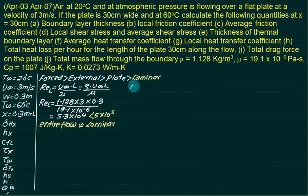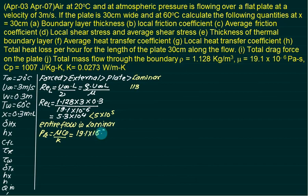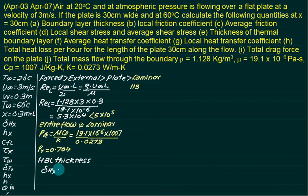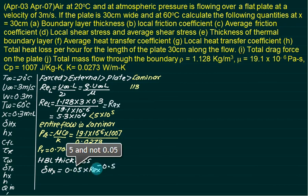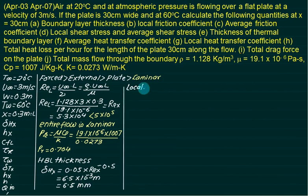For laminar flow, go to the table (forced convection, external flow, flat plate, laminar). Calculate the Prandtl number: Pr = μ·C_p / k, with μ = 19.1×10⁻⁶, C_p = 1007 J/kg·K, and k = 0.0273, giving Pr ≈ 0.7. The hydrodynamic boundary layer thickness for laminar flow is δ_hx = 5·x·Re_x^(−0.5), which gives δ_hx = 6.5×10⁻³ m = 6.5 mm.